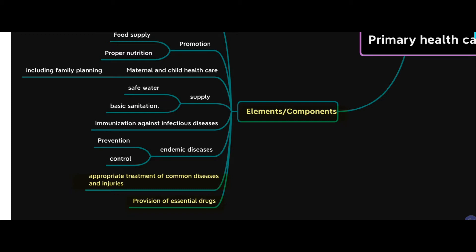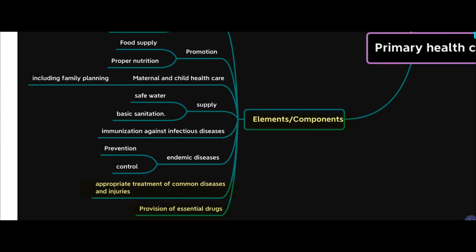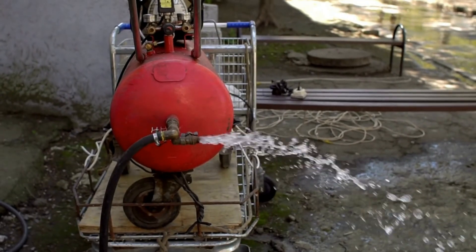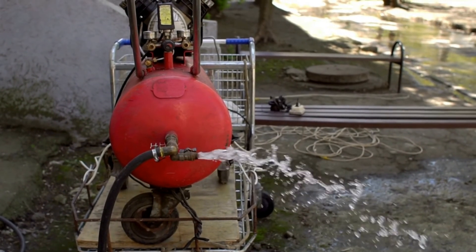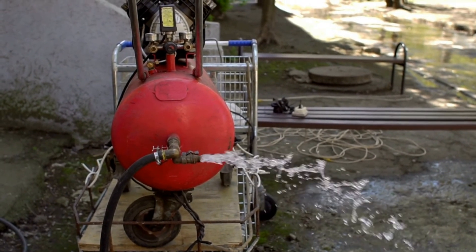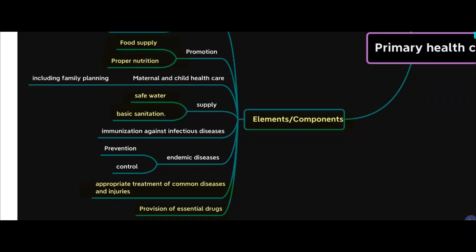Under the promotive component, primary health care should be able to promote food supply and proper nutrition, as well as provide safe water and basic sanitation to the people. These are the basic things required for promoting good health, and providing them is the job of primary health care.